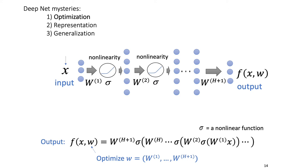As a mathematician working with deep learning, there are three major mysteries: first is optimization, second is representation, and third is generalization.